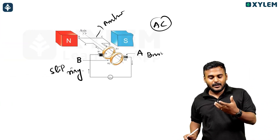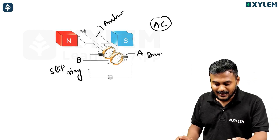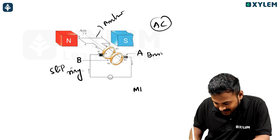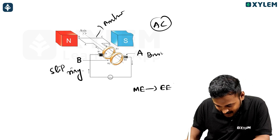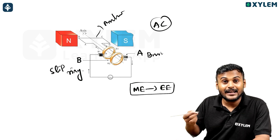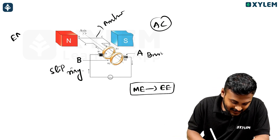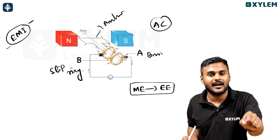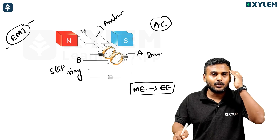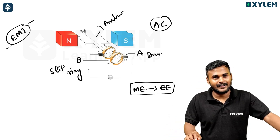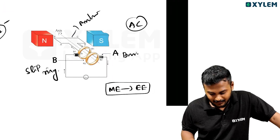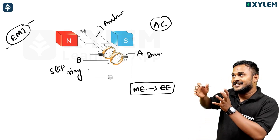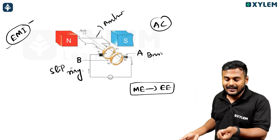The transformer is the same. Mechanical energy converts to electrical energy. The working principle is electromagnetic induction. In the DC generator, slip rings are used. If we replace the slip rings with split rings, the output changes from AC to DC.